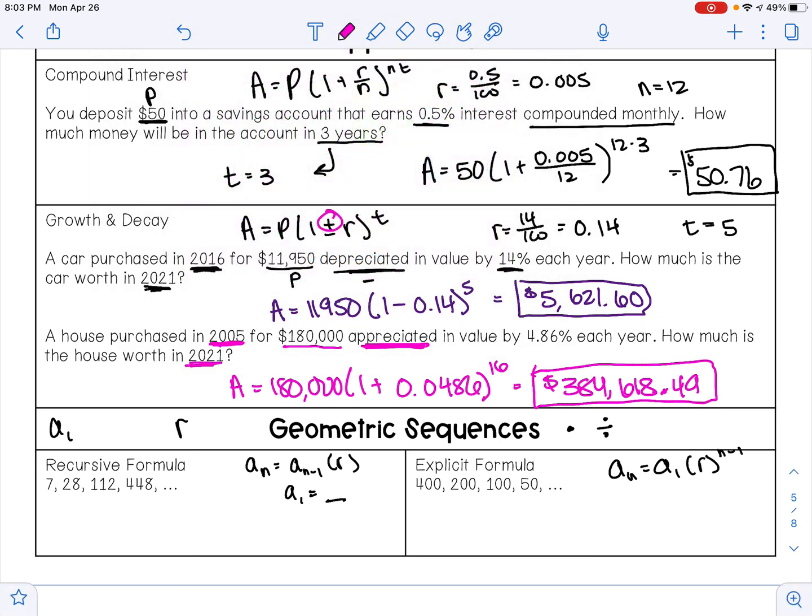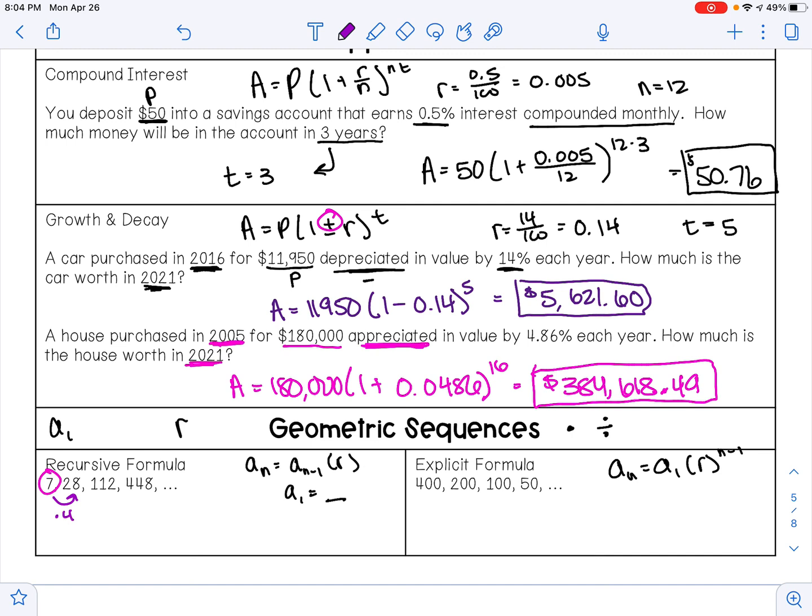So in this problem here, 7 is my first term, so 7 is a sub 1. And then to go from 7 to 28, I multiply by 4. 28 to 112, I multiply by 4, and 112 times 4 is 448. So my recursive formula would be a sub n equals a sub (n minus 1) times 4, where the first term is 7.